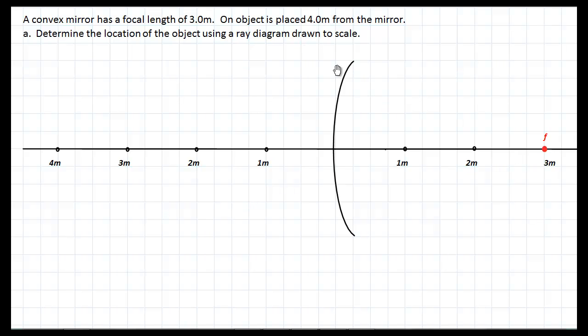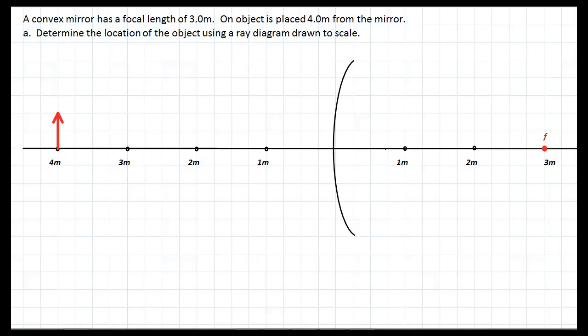Next we need to place an object 4 meters from the mirror. It's always going to be on the mirrored side, so the 4 meter mark will be somewhere over here. Remember the tradition is to use arrows as our objects and they can be any height as it's all relative to the magnification anyway. So I'm going to make my object a couple of units high. We see our object and now we can begin with our ray diagram.